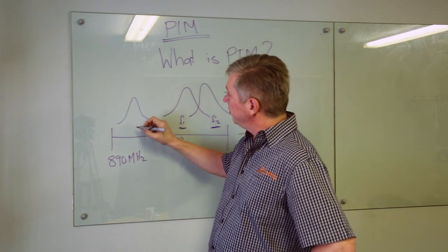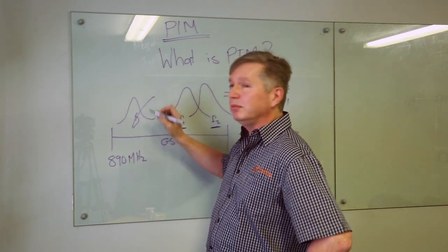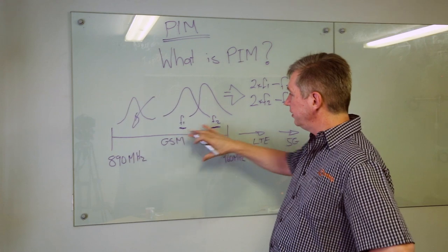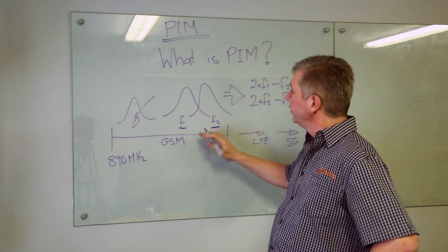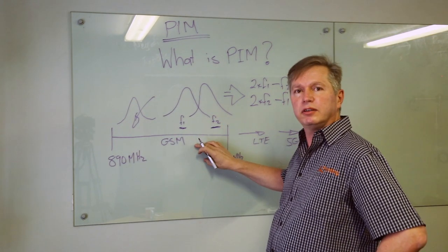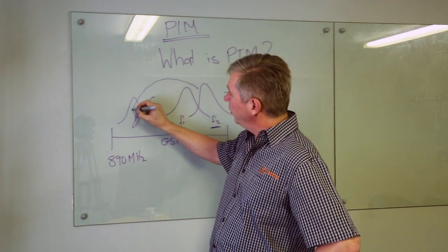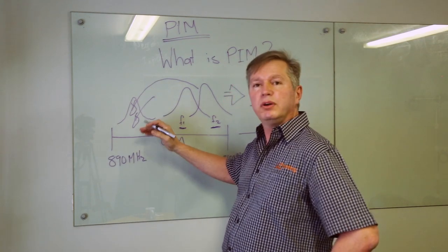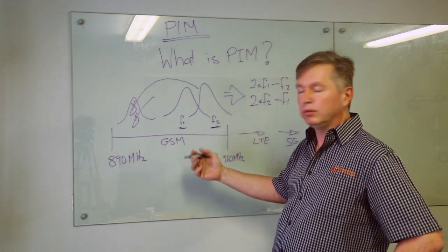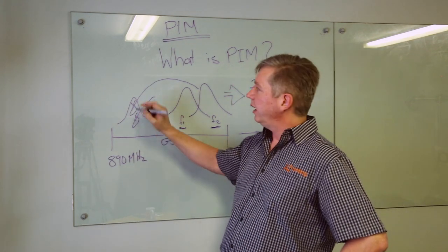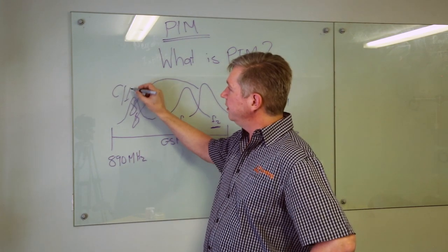This product basically becomes interferers. If we use this GSM as an example, you would be transmitting on your base station in both frequency one and two but you would be actually flooding your input or your receive end of the base station with this distortion, and your C2I is degraded.